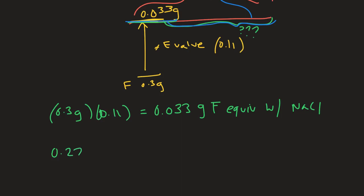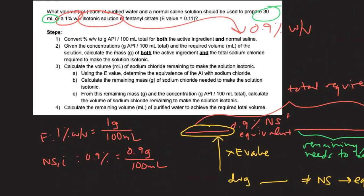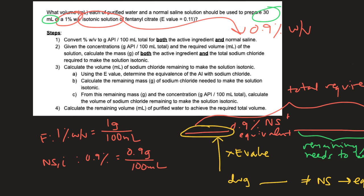To summarize the tonicity calculation steps: convert percent strength to workable units, determine mass of drug and total NaCl required for isotonicity, multiply drug mass by E-value to get NaCl equivalent, subtract from total NaCl required to find remaining NaCl, then use normal saline concentration to find the required volume, and subtract from total volume to find purified water needed.